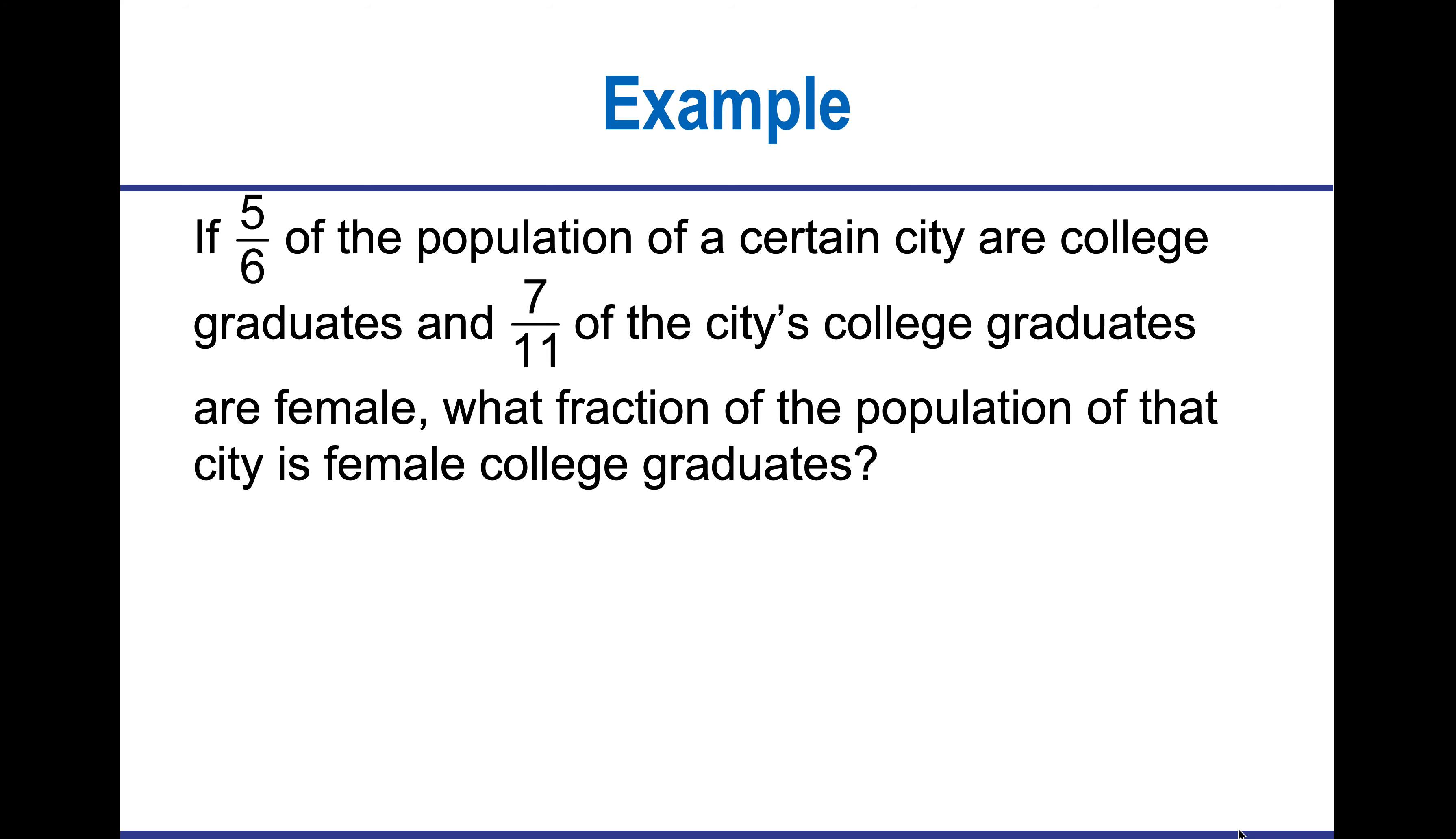Here's an example. If 5 sixths of the population of a city are college graduates and 7 elevenths are female, what fraction of the population of the city is female college graduates? So it's going to be 7 elevenths of 5 sixths, which we're going to multiply to complete that operation and get 35 over 66.